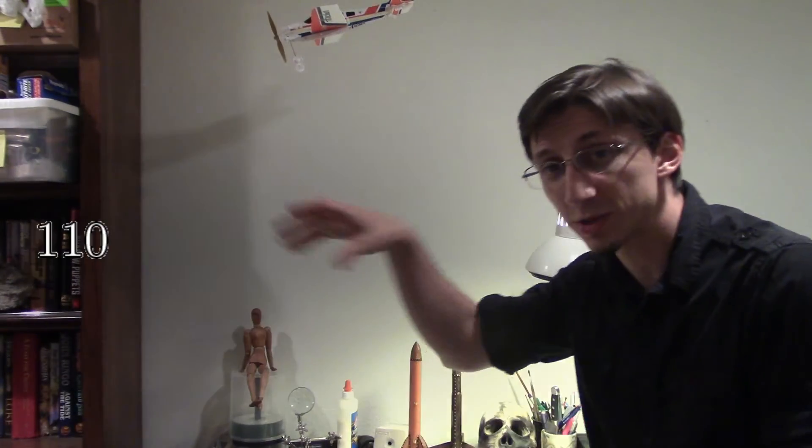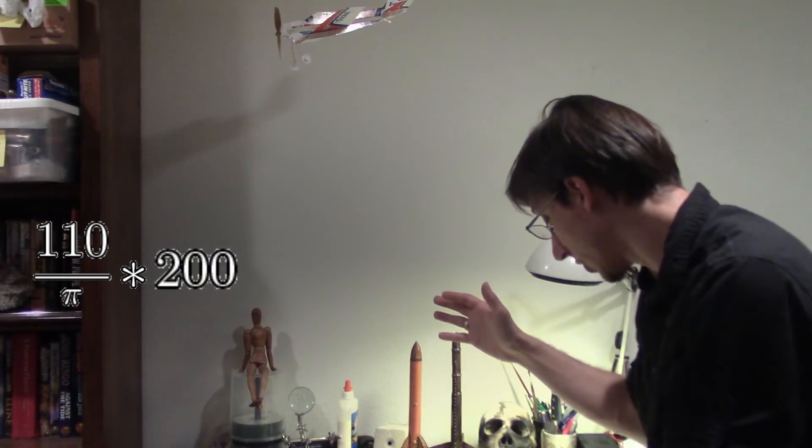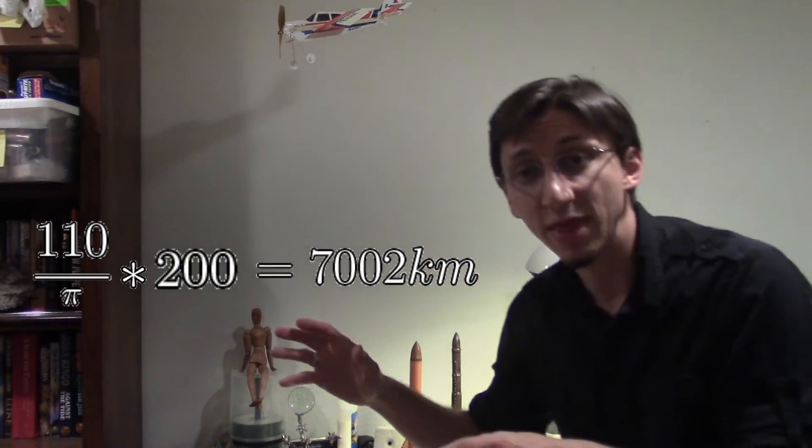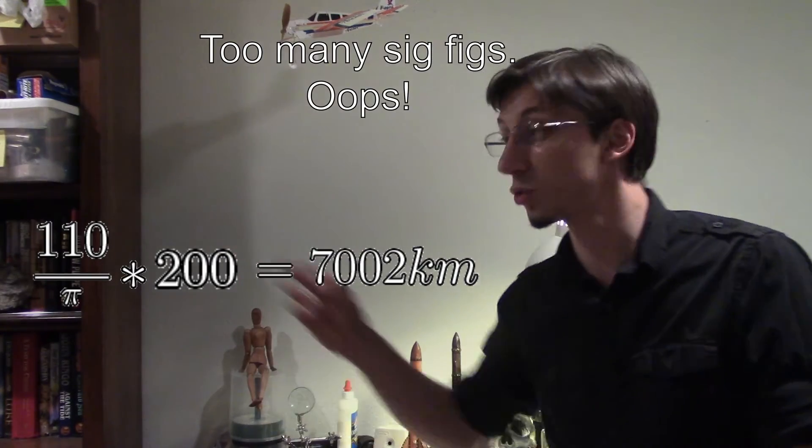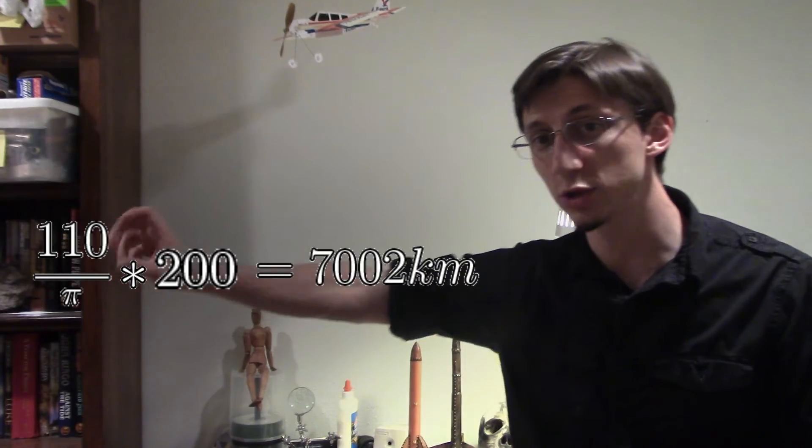So in this case, I have 100 pixels divided by π over 200. The 200 moves up, makes this number rather large, and I end up with 7,002 kilometers. So during the time period that I was recording, the Moon moved 7,002 kilometers.